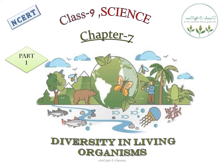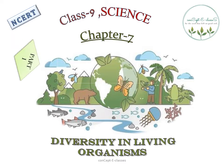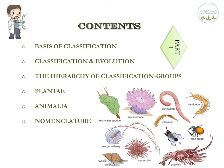This is Concept E Classes, and today we will deal with chapter 7 of class 9 science: Diversity in Living Organisms. This is a very big chapter, so we will be covering it in two parts. In part 1, we will see the basis of classification, how evolution and classification are connected, and how organisms are classified into different groups called kingdoms — all kingdoms except Animalia, which we will study in the next part along with nomenclature.